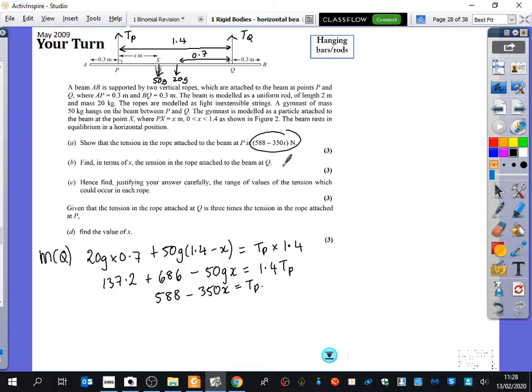Part B then says find the tension in the rope attached at Q. So to find the tension in Q, what do I know about the tension in Q and the tension in P? They're different to each other. However, how do you want to find the tension in Q? We should resolve. We should resolve in the up and down direction to get TQ plus TP equals 50g plus 20g, which is 70g.